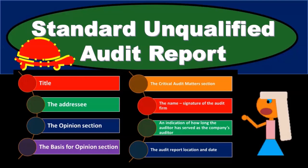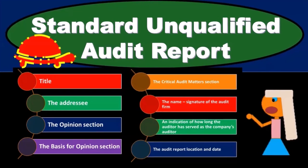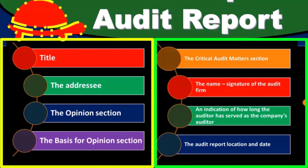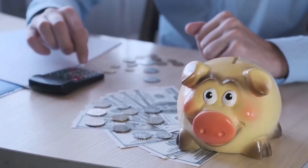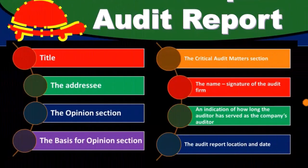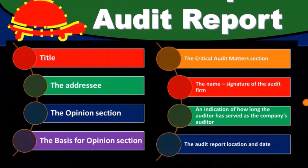In this presentation we will take a look at the audit report for a standard unqualified opinion. The standard unqualified opinion is the most common type of opinion. This is what we would expect within the audit report, because management is making assertions that the financial statements they have put together have been done so in accordance with generally accepted accounting principles. We gather evidence within the audit process and then issue an opinion as to whether we believe that is the case.